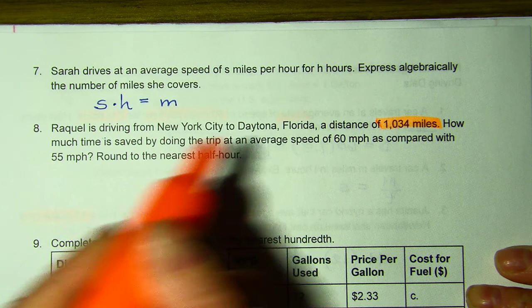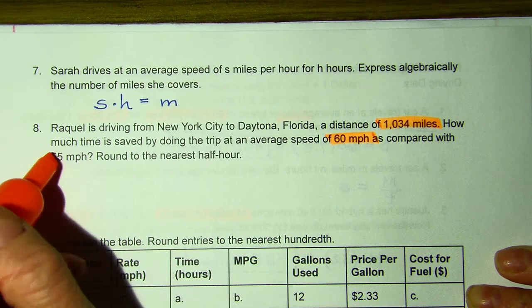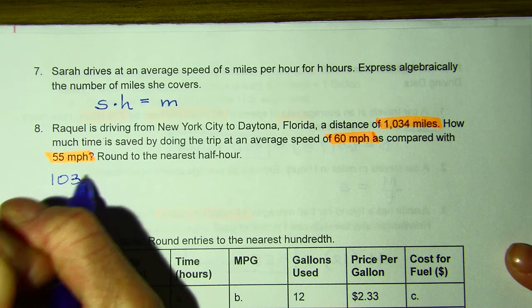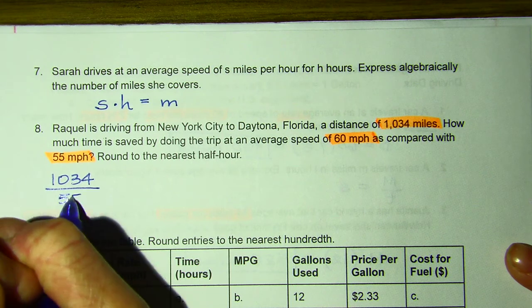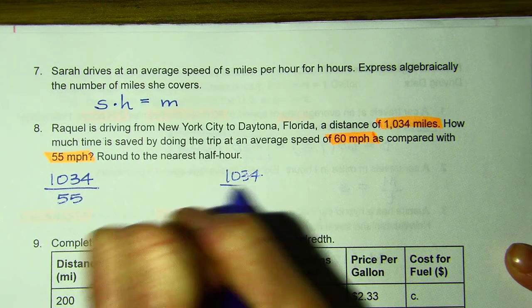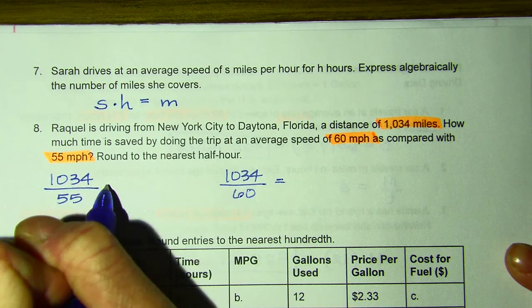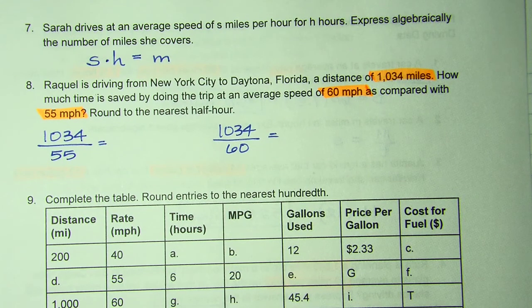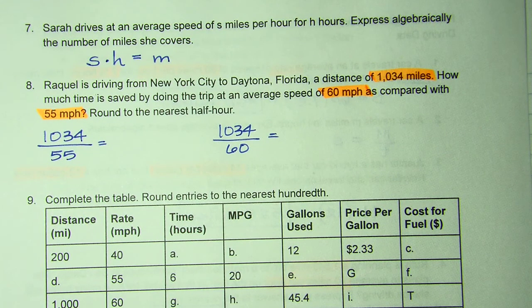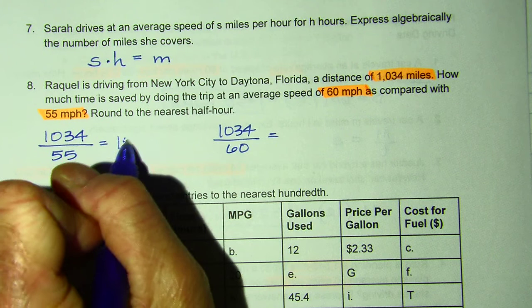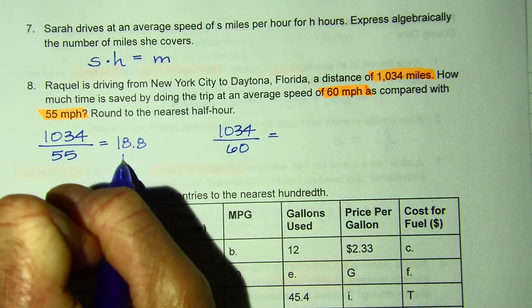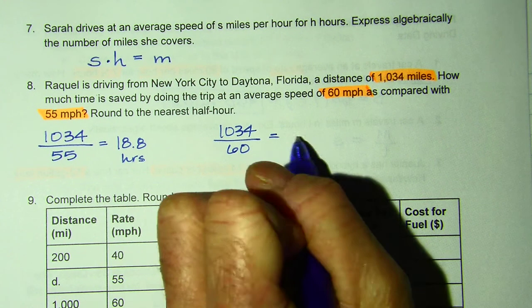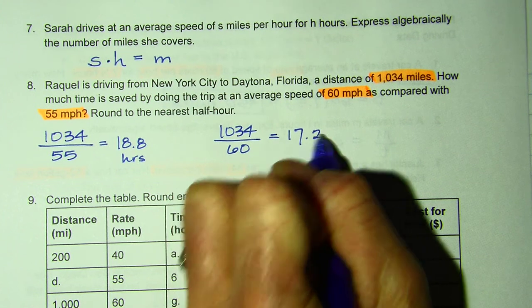How much time is saved by doing the trip at 60 miles per hour compared with 55? So let's see how much she saves. If I drive at 55 miles per hour versus if I drive at 60 miles per hour. So maybe there are freeways or highways with different speeds. So let's divide both. So this will take me 18.8 hours. And the second one takes me 17.2 hours.